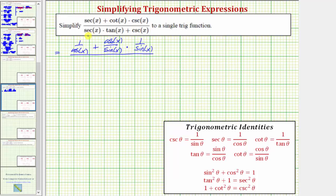And now on the bottom, again, secant x is equal to one over cosine x, times tangent x, which is equal to sine x over cosine x, and we have plus cosecant x, which equals one over sine x.